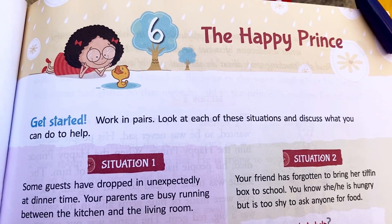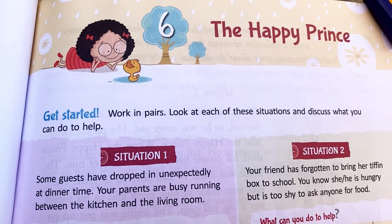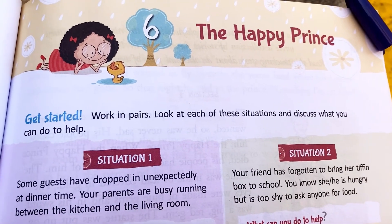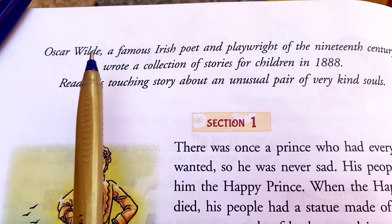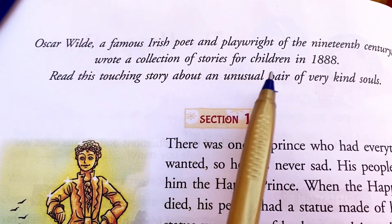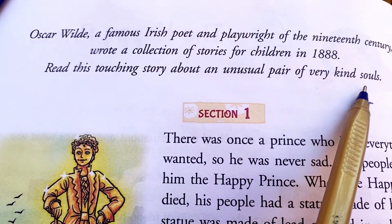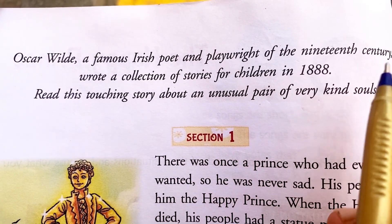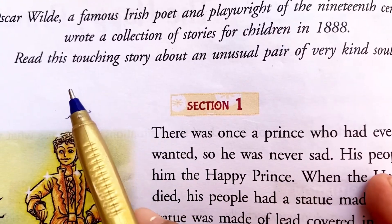Hello friends, welcome to my channel. Today we are going to read lesson number 6, The Happy Prince, from Class 4 from the Raindrops English Reader. Oscar Wilde, a famous Irish poet and playwright of the 19th century, wrote a collection of stories for children in 1888. Read this touching story about an unusual pair of very kind souls.